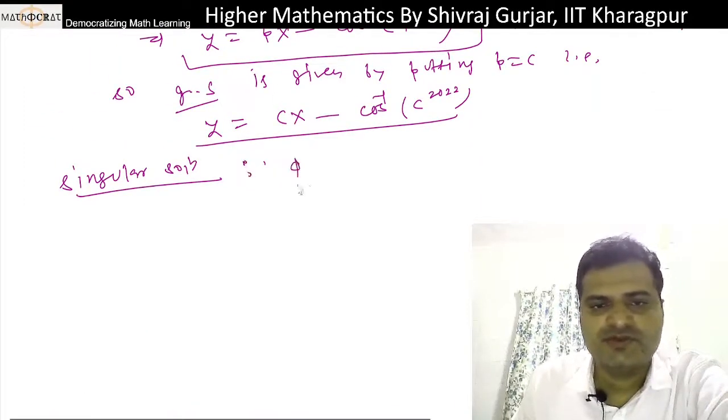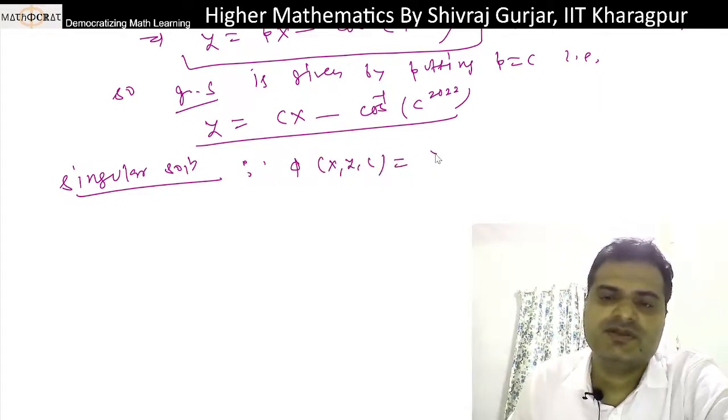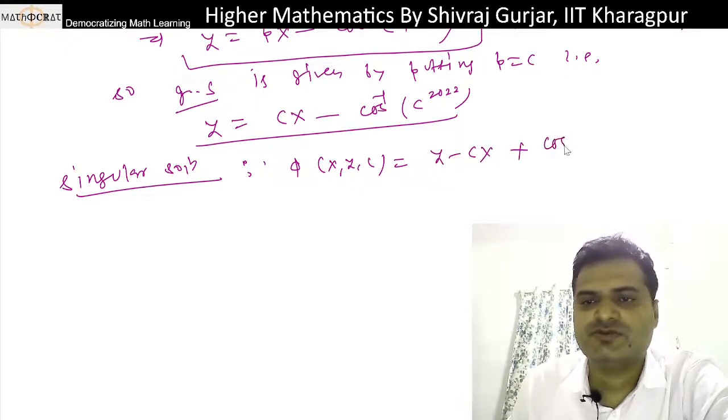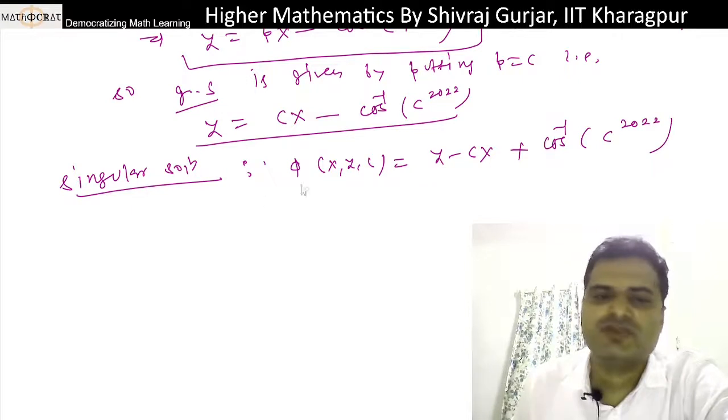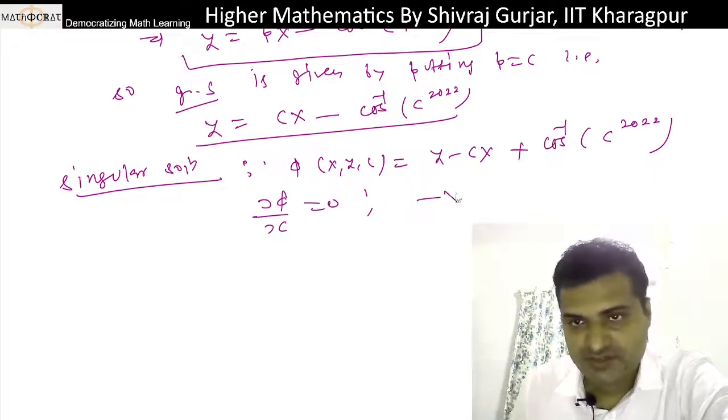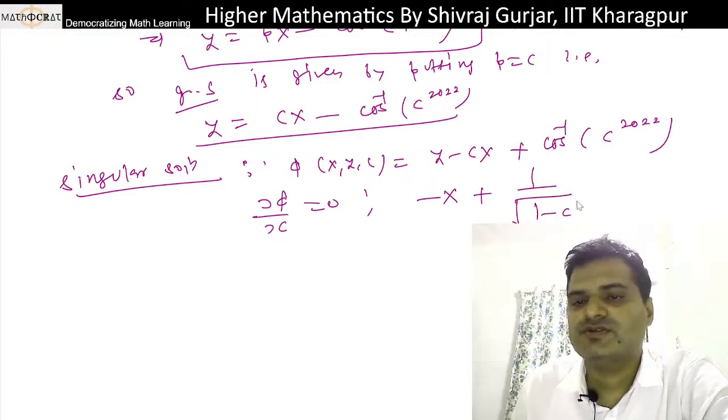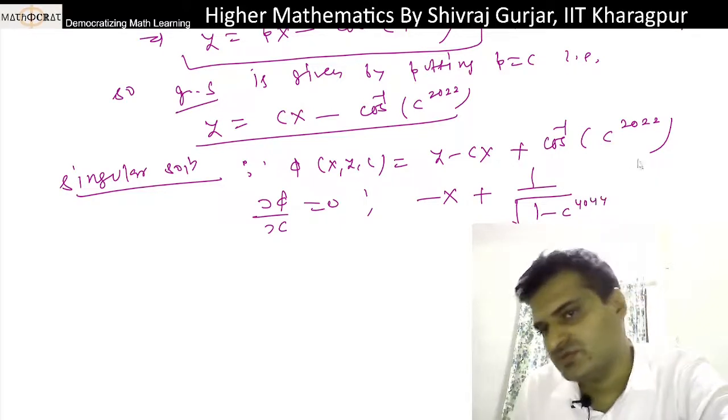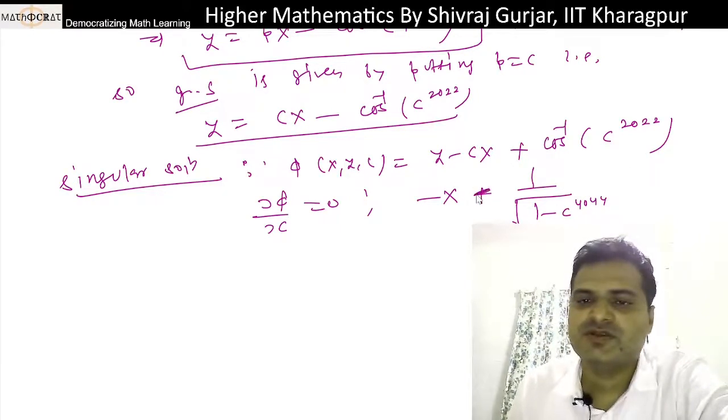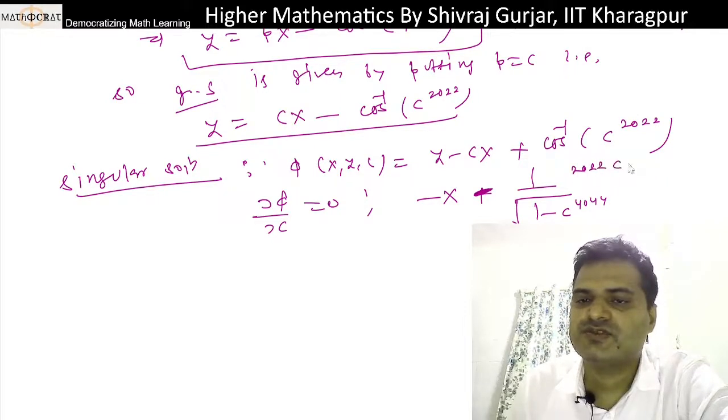Let φ(x,y,c) be the function: y - cx + cos^(-1)(c^2022) = 0. Taking ∂φ/∂c = 0 to get -x + 1/√(1-c²) times 2022c^2021 = 0.